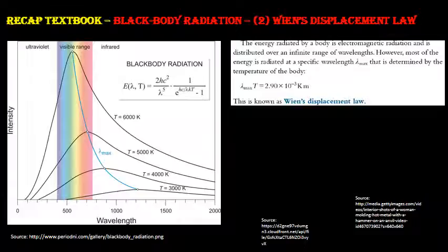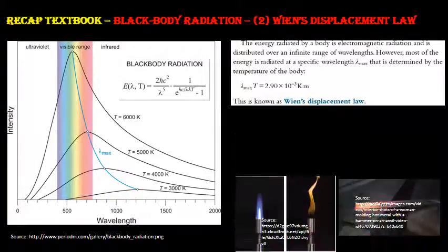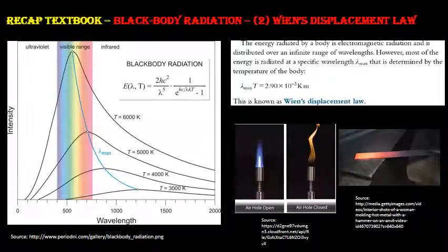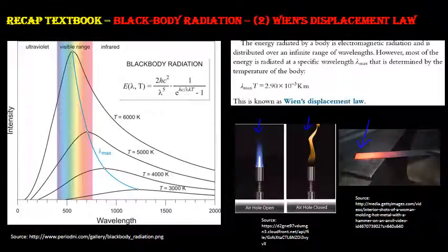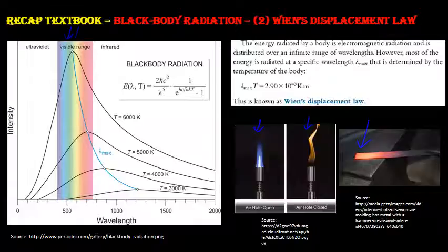This explains why a heated metal glows red-hot, and why a Bunsen burner appears orange-yellow with the air hole closed, but blue when the air hole is opened — indicating a higher temperature. The peak emission shifts to shorter wavelengths at higher temperatures, matching what we see in the graph.